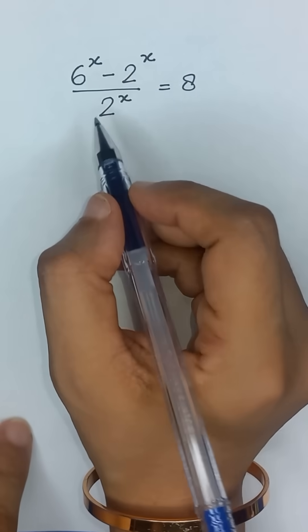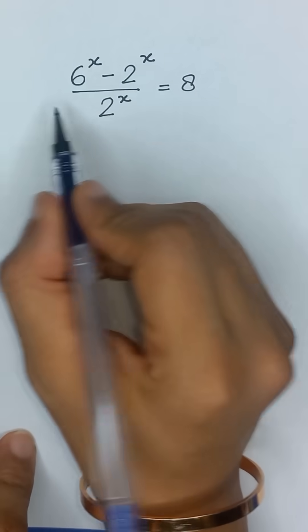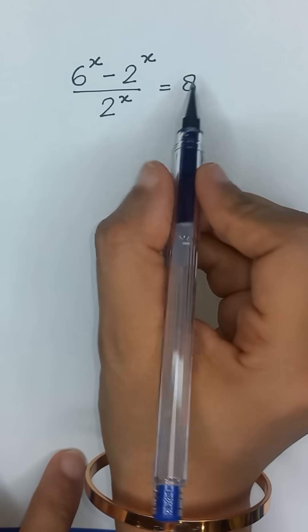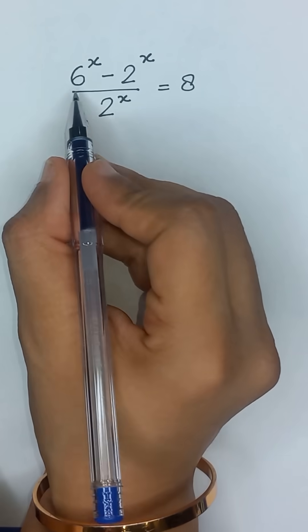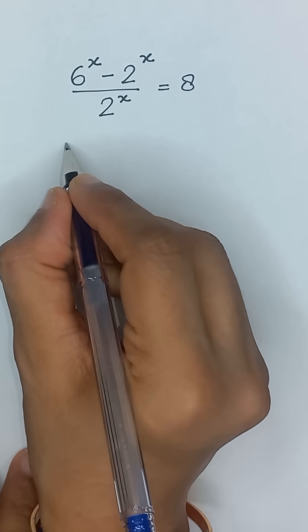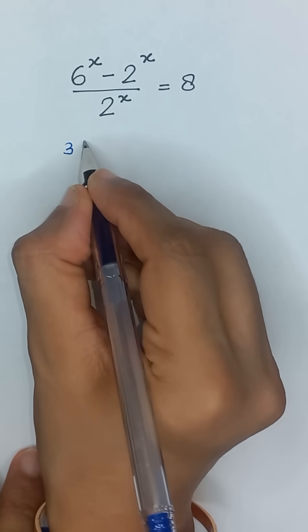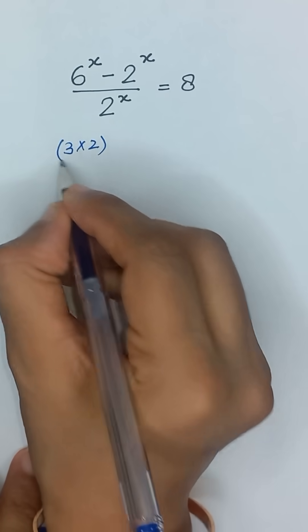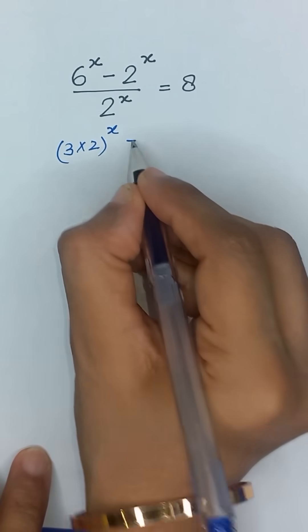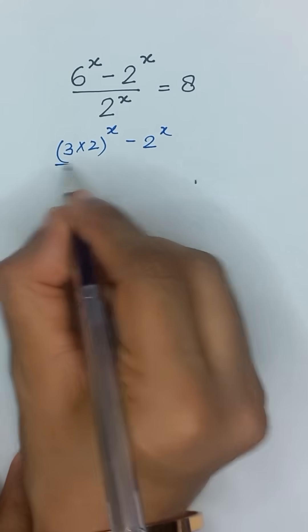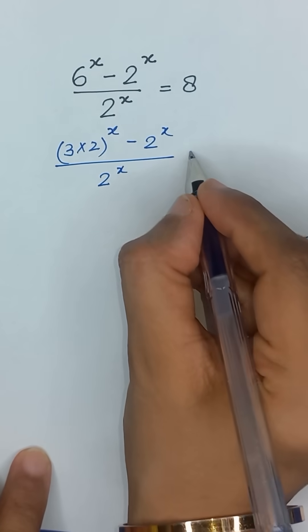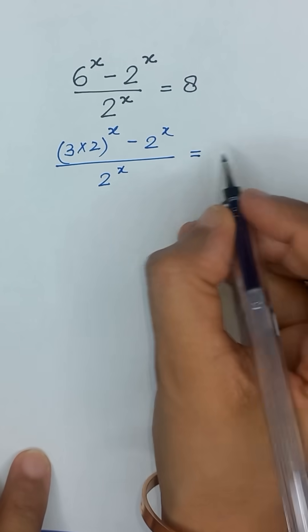6 to the power x minus 2 to the power x, divided by 2 to the power x, is equal to 8. We can write 6 as 3 times 2, so it becomes 3 times 2 to the power x minus 2 to the power x, divided by 2 to the power x, is equal to 8.